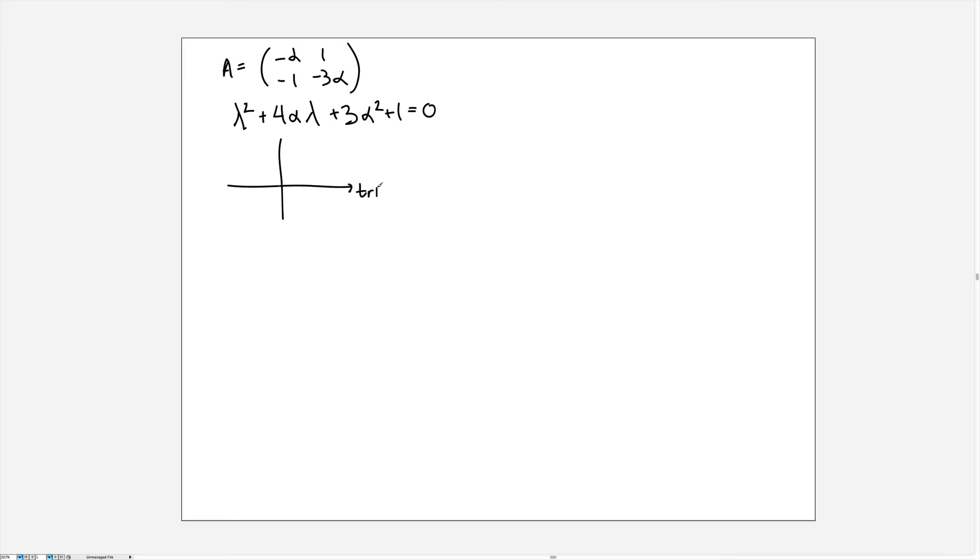Here's the trace of A and here is the determinant of A. And what I'd like to do, so the trace of A is equal to minus 4 alpha